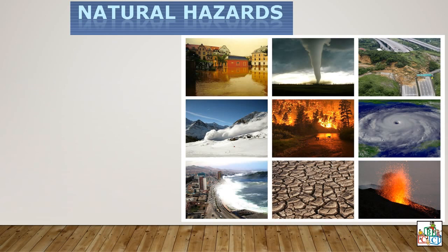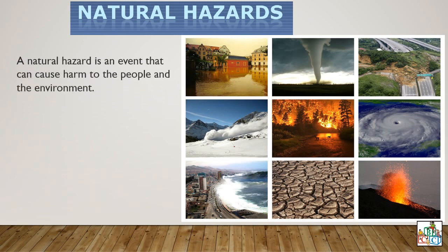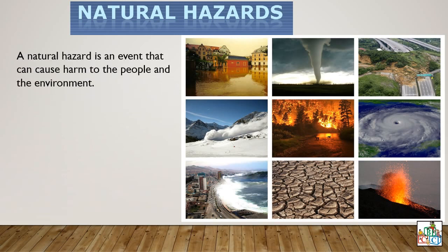Take a look at the picture. Let us now see the meaning — the definition of what is a natural hazard. A natural hazard is an event that can cause harm to the people and the environment. You have to memorize this definition.